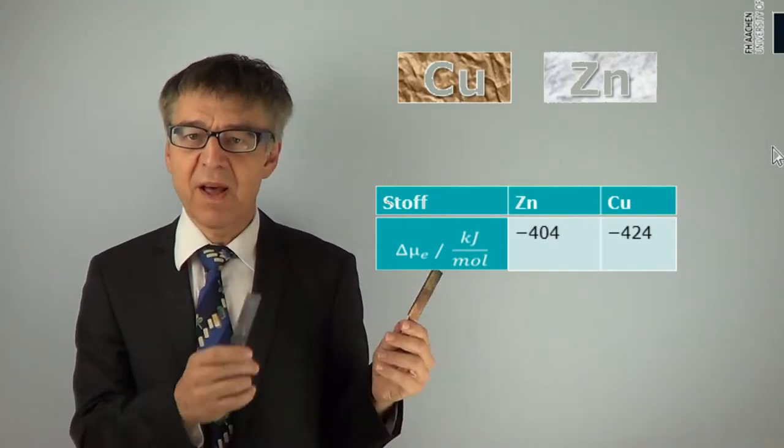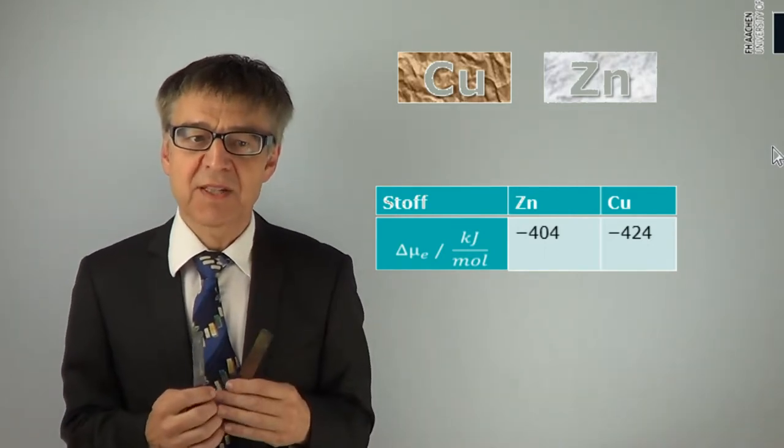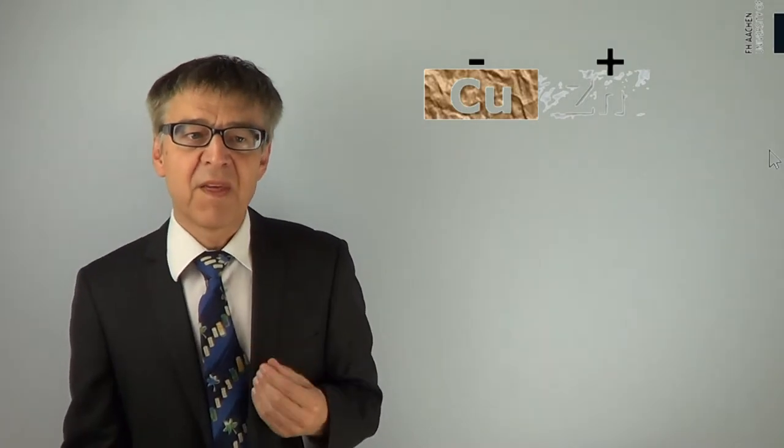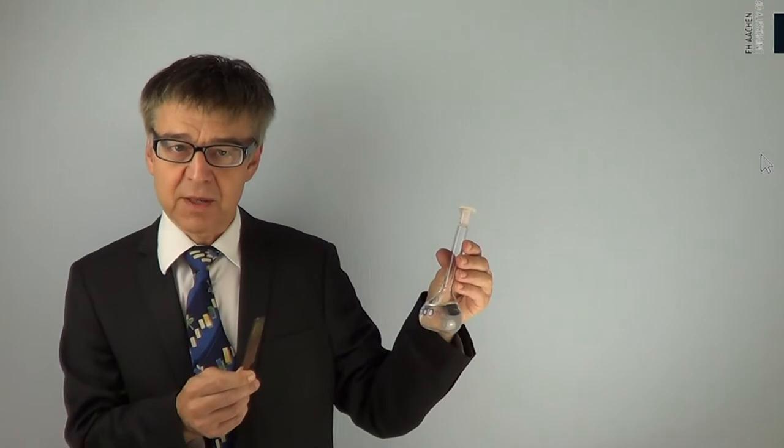Consider the two metals copper and zinc. Electrons feel more comfortable in copper, which can be expressed by their chemical potential. If we put the two metals into contact, electrons will move from the less noble zinc to the more noble copper. Copper gets negatively charged with respect to zinc. In equilibrium, there is a jump in electric potential at the phase boundary. Similarly, we obtain a potential jump if we build a combination of an electronic conductor and an ionic conductor.